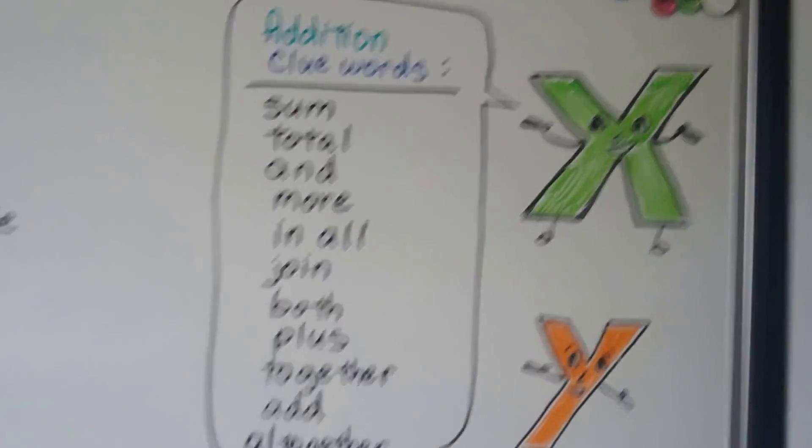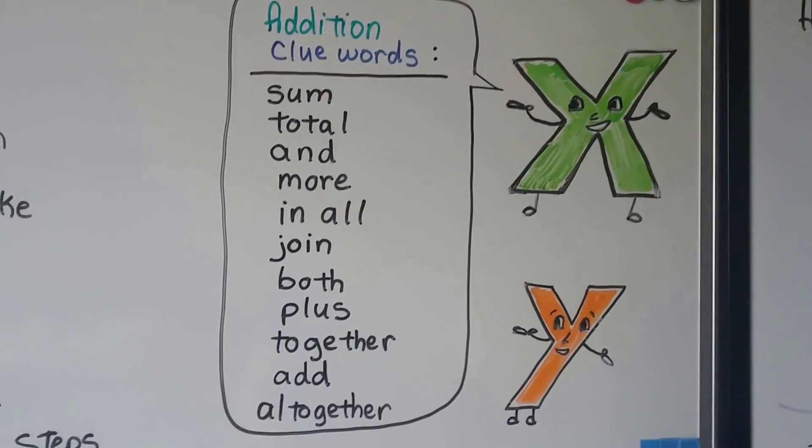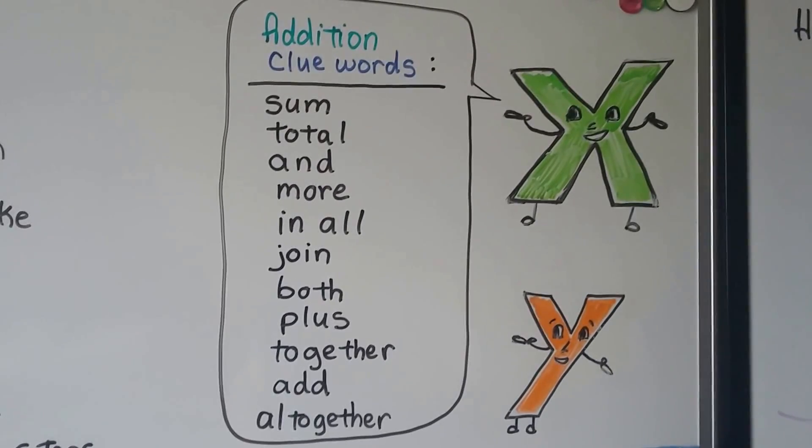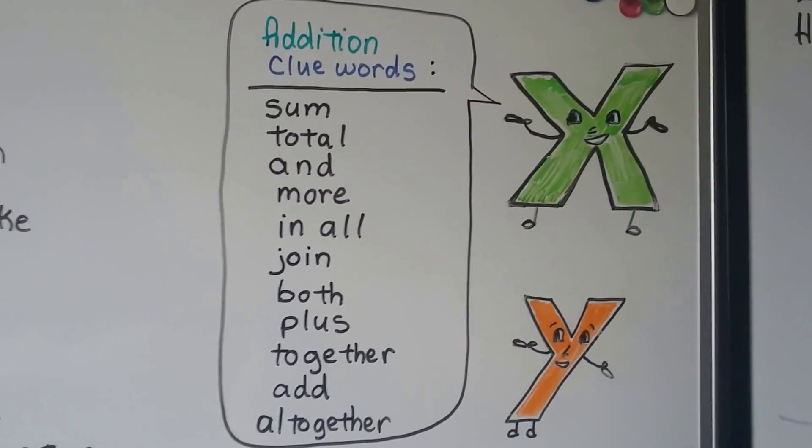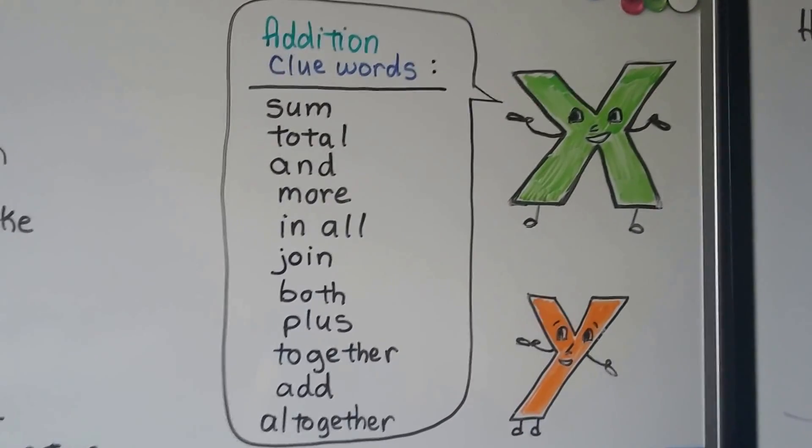We just add the tens and ones and put them together. So there's many addition clue words. There's words like sum, total, and, more, in all, join, both, plus, together, add, and altogether. And there's even more clue words, but those are the ones you'll probably see the most.